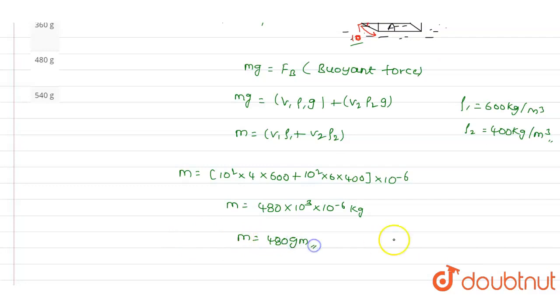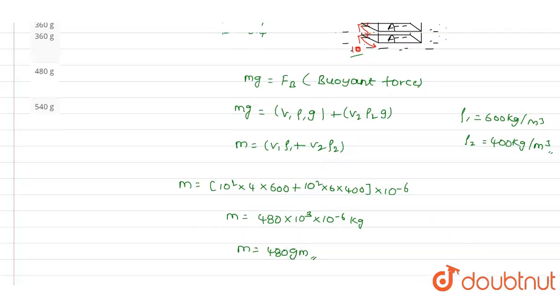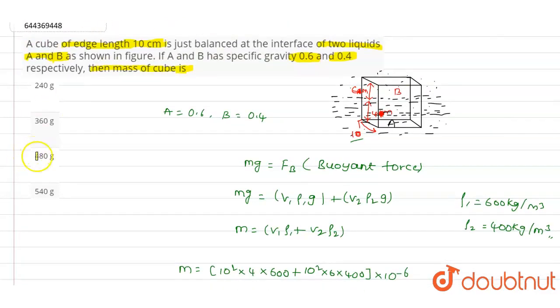So this is the value of the mass of the cube. Out of these four options, if you observe option C, we have 480 grams. This is what we have got in the solution as well, so option C is the correct answer for this question.